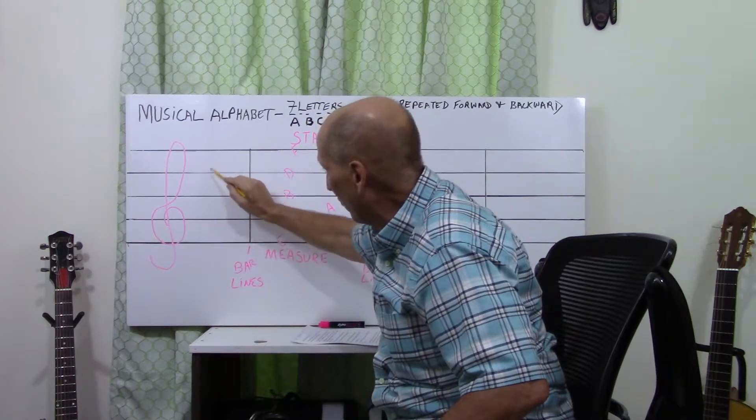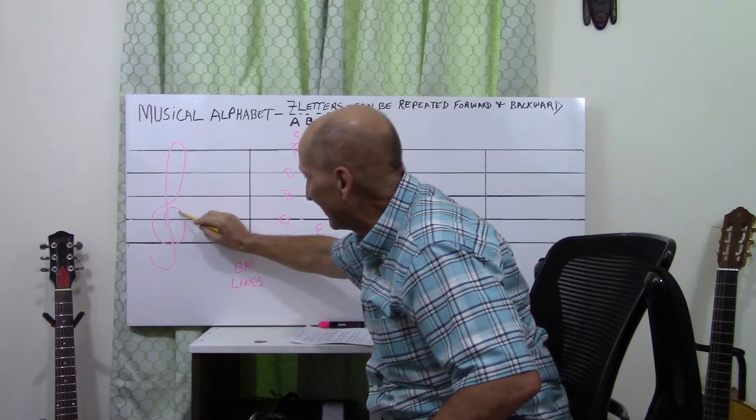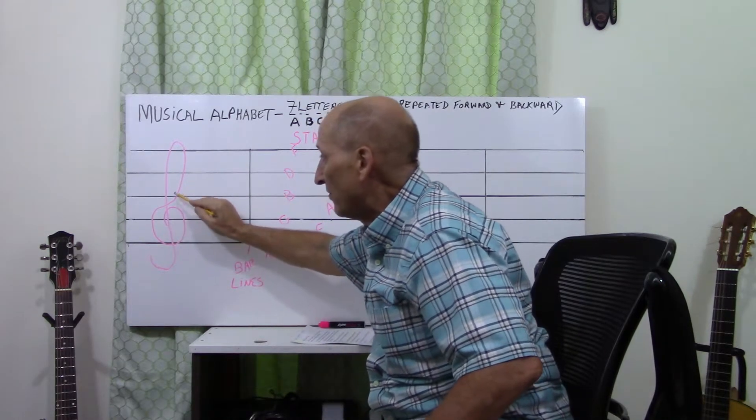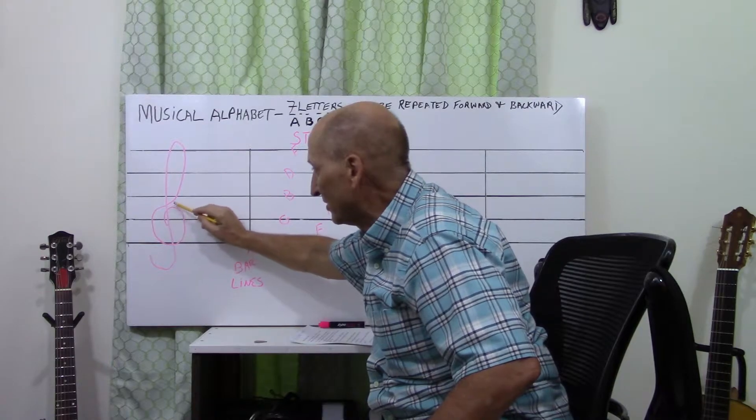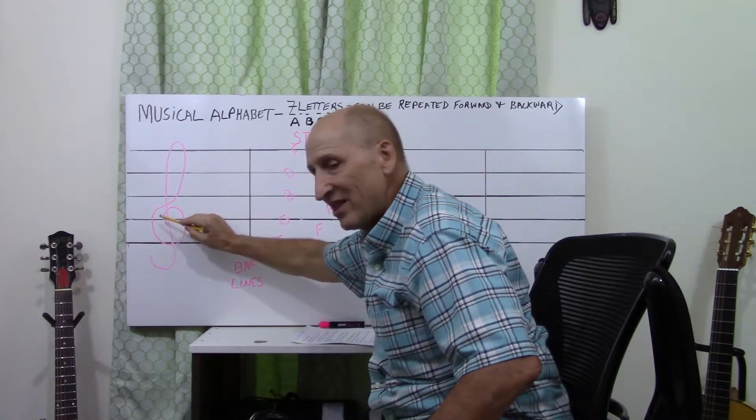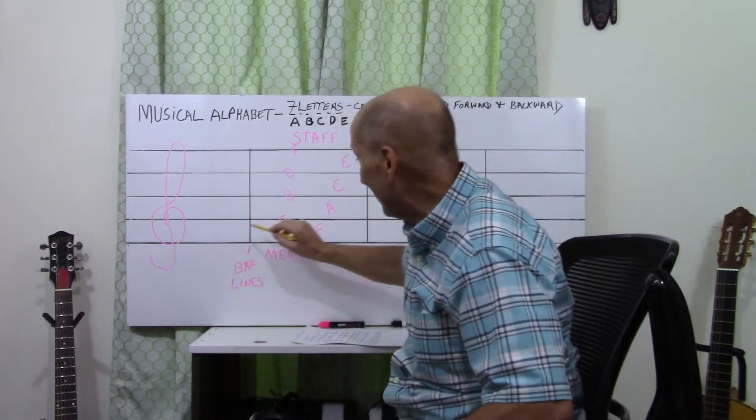Remember the lines? One, two, three, four, five. It crosses the second line. Now, the name G-clef, when it crosses the second line, it gives that line the name G.